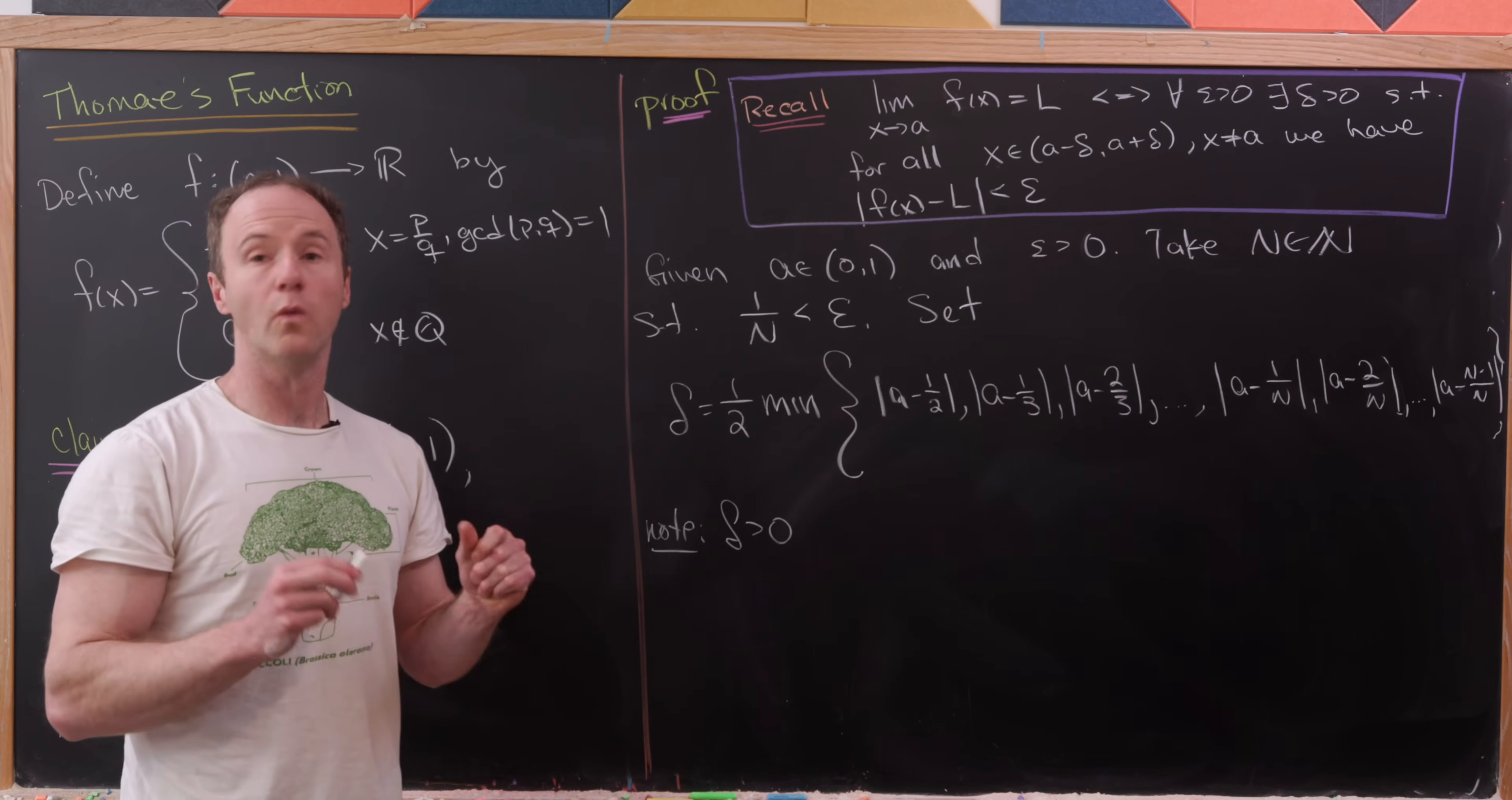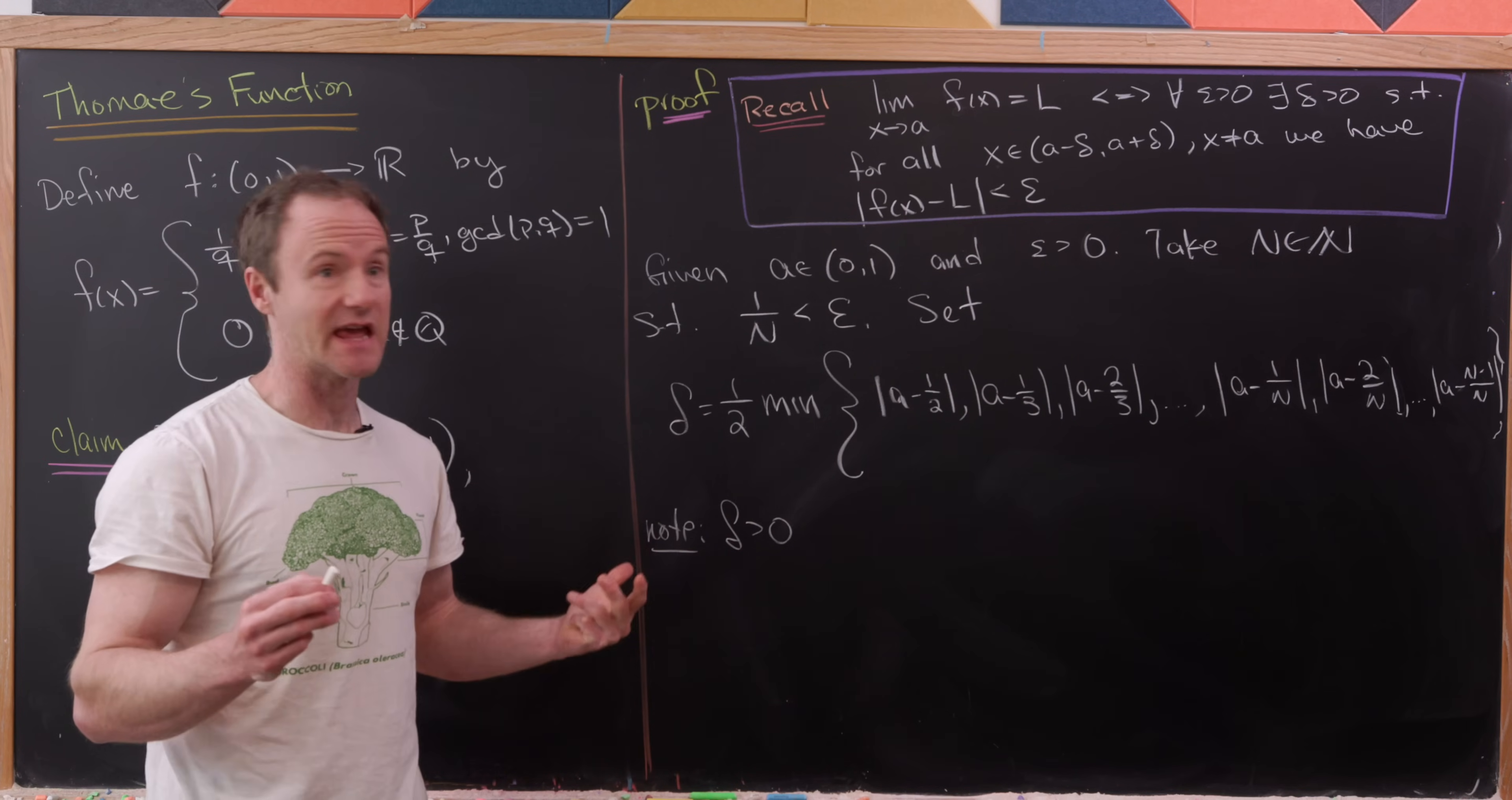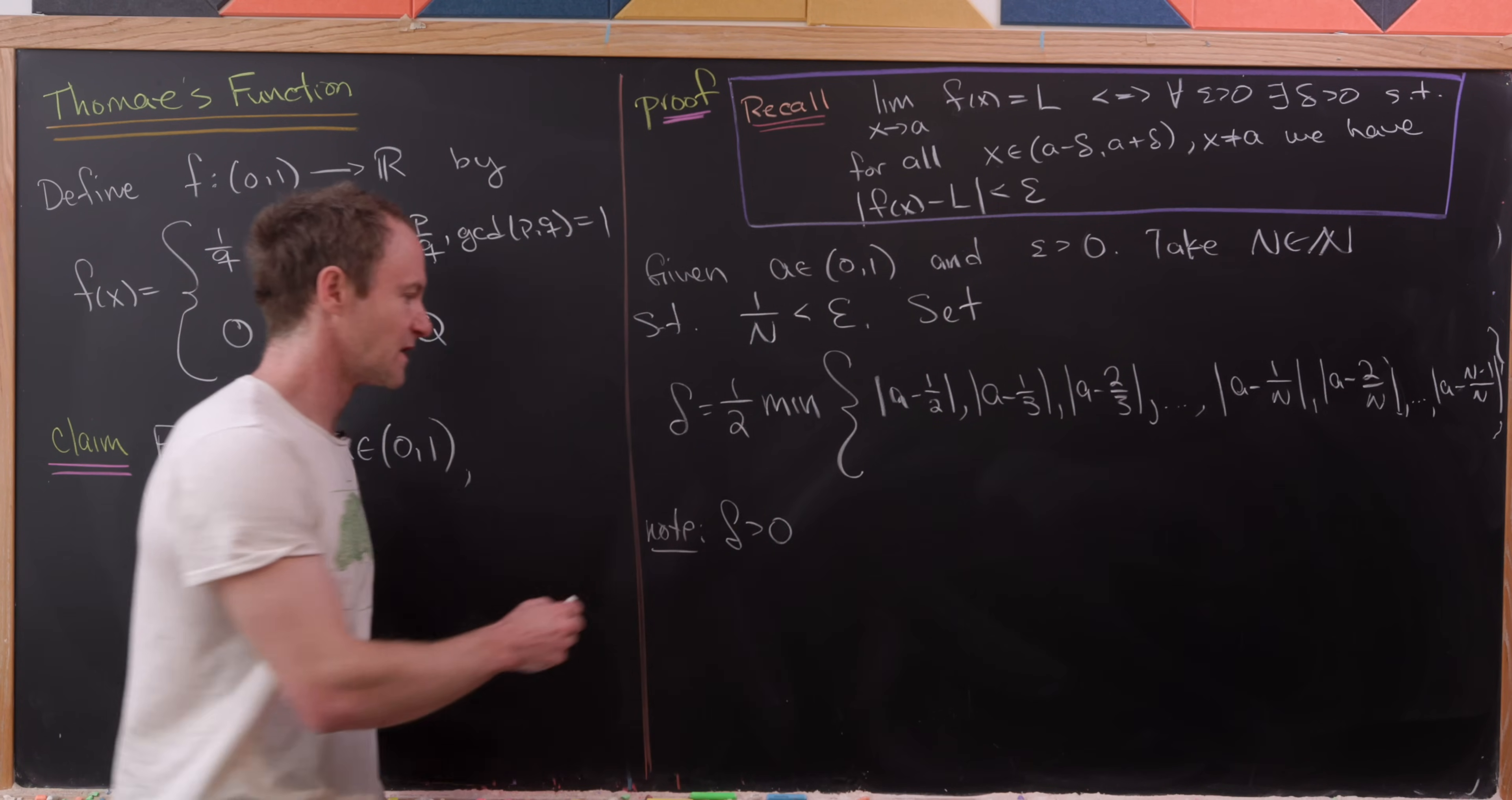And you might say, well, wait a minute, let's say that A happens to be one of those rational numbers that I've written there. Well, in that case, in the case that A is one of those rational numbers, what I want to do is just exclude it from this set.